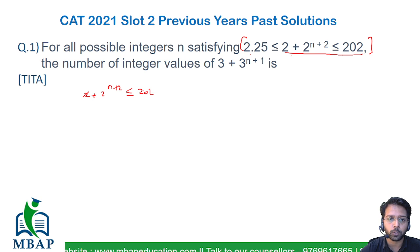If you subtract 2 from either side, the value will become 2^(n+2) ≤ 200. Now suddenly I'm going to look at all those values which are the powers of 2. We know 2^7 will become 128 and 2^8 will become 256.